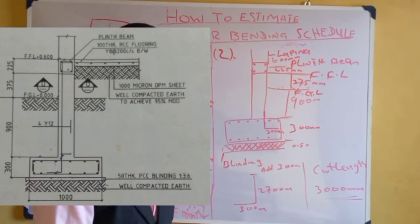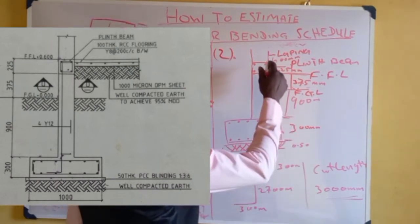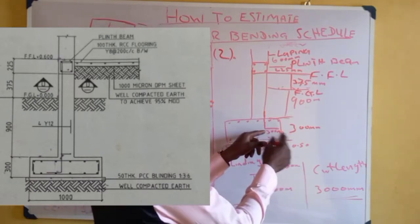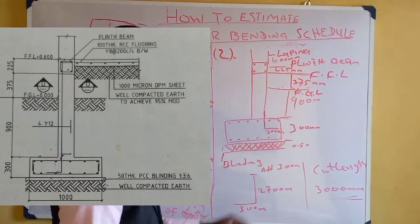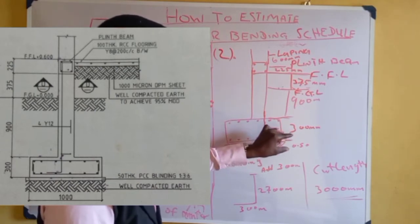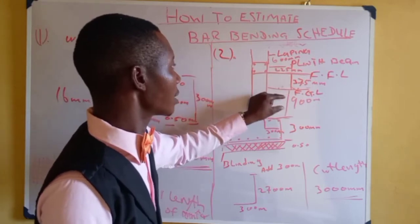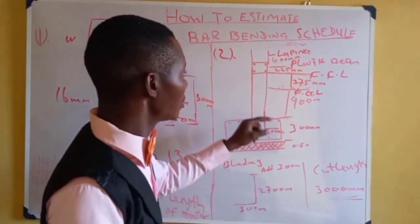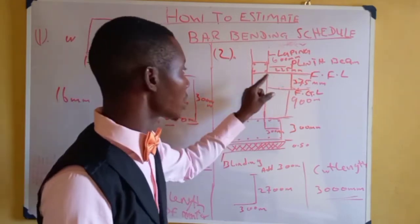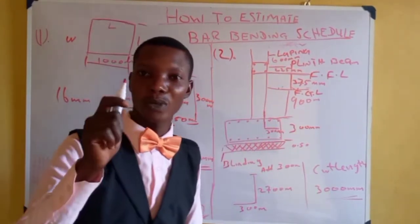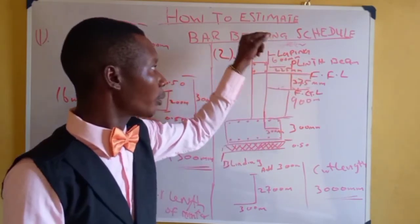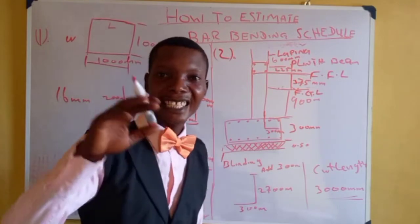From the plate beam, the lapping is 600mm. Try and follow me. The lapping is 600mm. When you add these together: 300 plus 900 gives 1,200 — no wait, 600 plus 900 gives 1,500. Then 1,500 plus the plate beam height gives 2,100. Adding the lapping of 600mm after the plate beam gives you 2,700mm total.